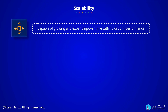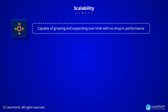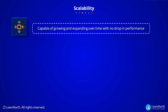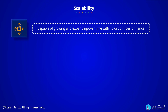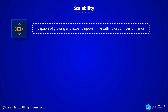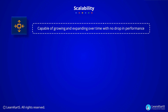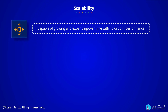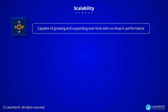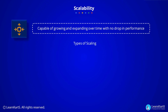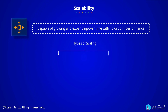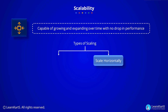Scalability in cloud computing is the ability to handle growing or diminishing IT resources to meet business demands in a capable way. Scalability is a planned level of capacity that can grow or shrink as needed. There are two types of scaling: horizontal scaling and vertical scaling.